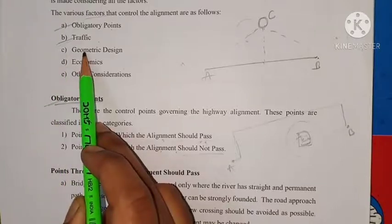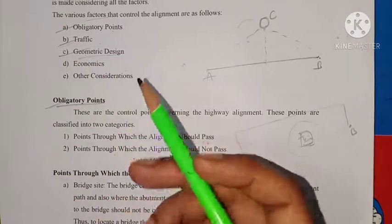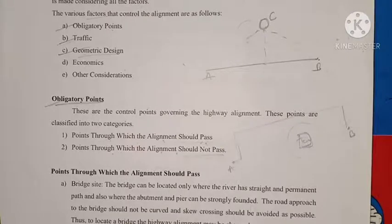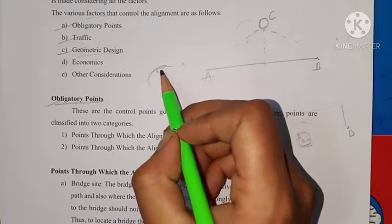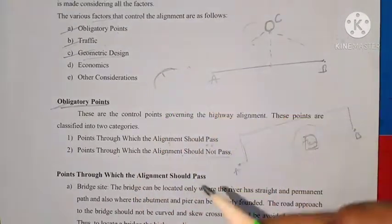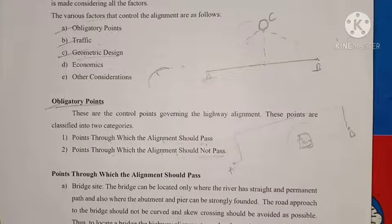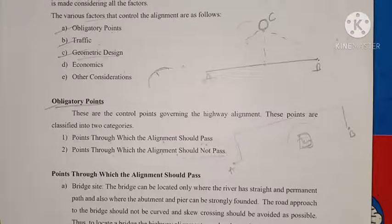The third factor is geometric design. Geometric design factors such as gradient, radius of curve — whether horizontal or vertical curve — and sight distance govern the alignment of the highway.